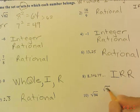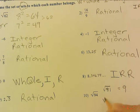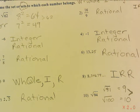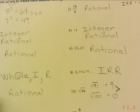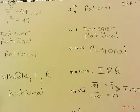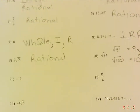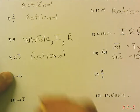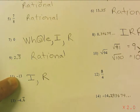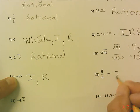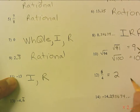Square root of 94: the square root of 81 is 9, and the square root of 100 is 10, so 94 is in between 9 squared and 10 squared. Therefore it's not a perfect square, and the square root of all non-perfect squares is irrational. Negative 13 is an integer and it's rational — it's not a whole number because it's not positive. Number 12 is tricky — they want you to say rational, but it can be simplified to 2, and 2 is a whole number, integer, and rational.